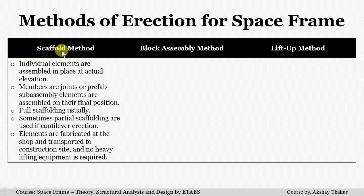In the scaffold method, the members, joints, or prefab sub-assembly elements are assembled in their final position. For a particular structure, full scaffolding is adopted, and sometimes partial scaffolding is also used — for example, if your space frame has a cantilever portion, you need to use partial scaffolding for that cantilever part.